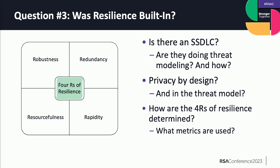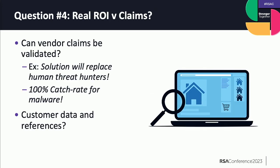Privacy by design — we always have to think about it, and it's no different in ML and AI. If you're threat modeling before you buy — which I strongly advise before you bring in corporation-changing AI and ML technology — make sure you put privacy in that threat model too. And the four R's of resilience: robustness, redundancy, rapidity, and resourcefulness. How are they measuring that? Are they using ML Perf, Data Perf? How can they give you assurance you'll have the resilience you need?